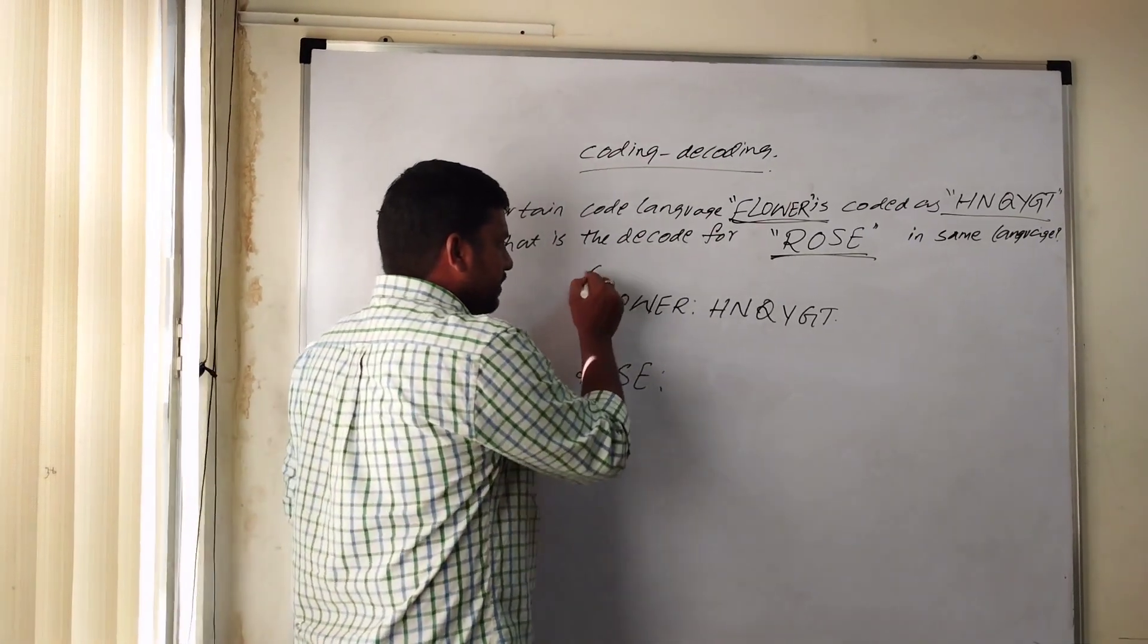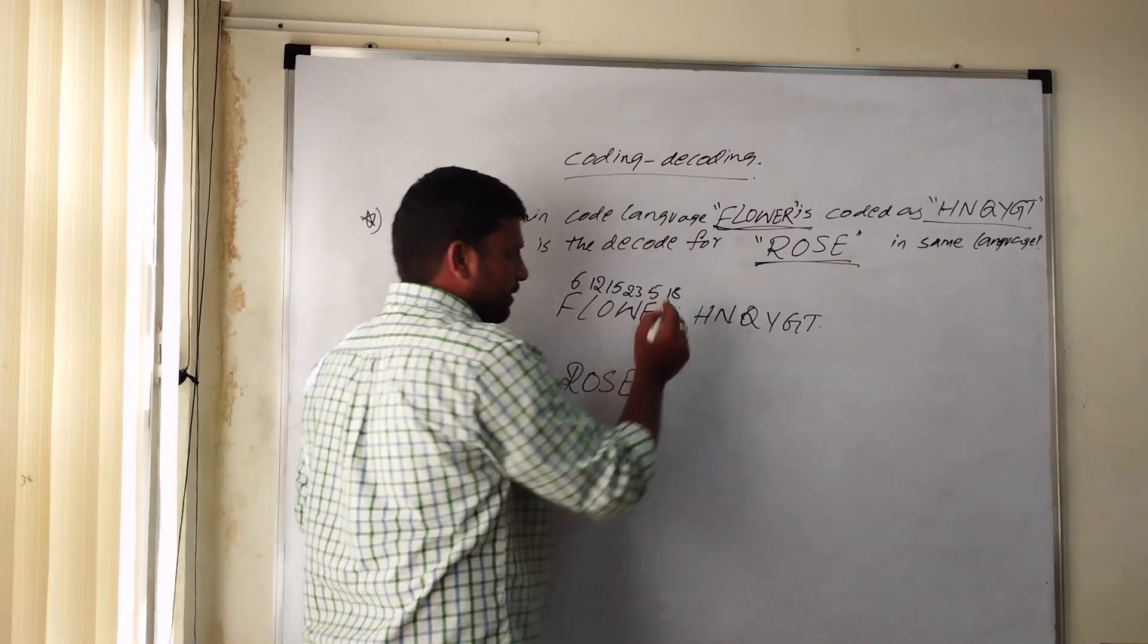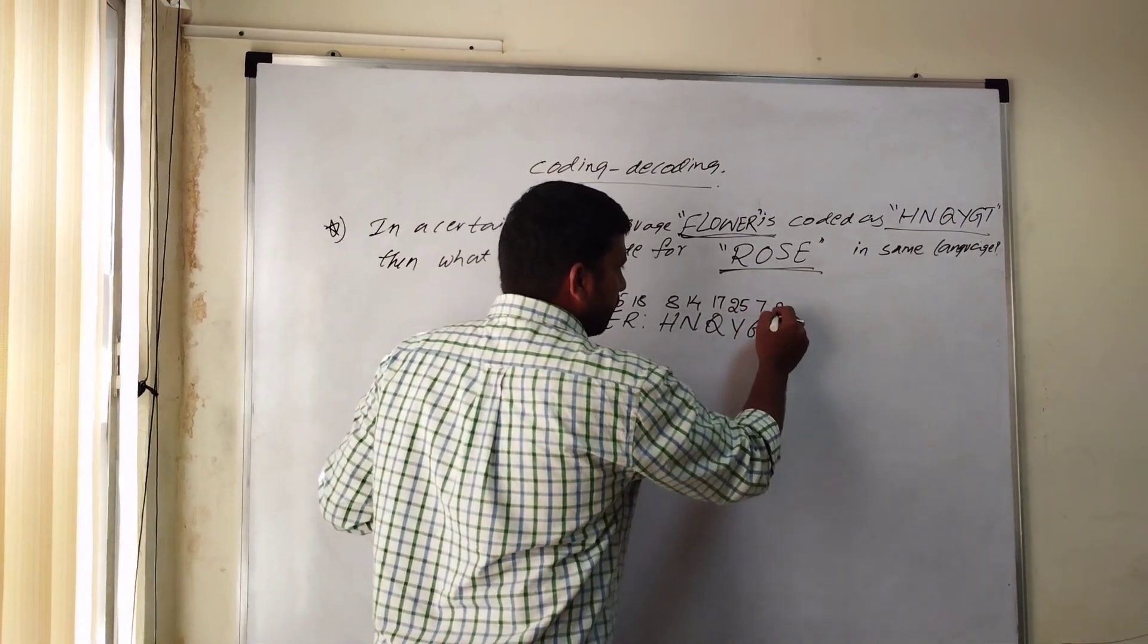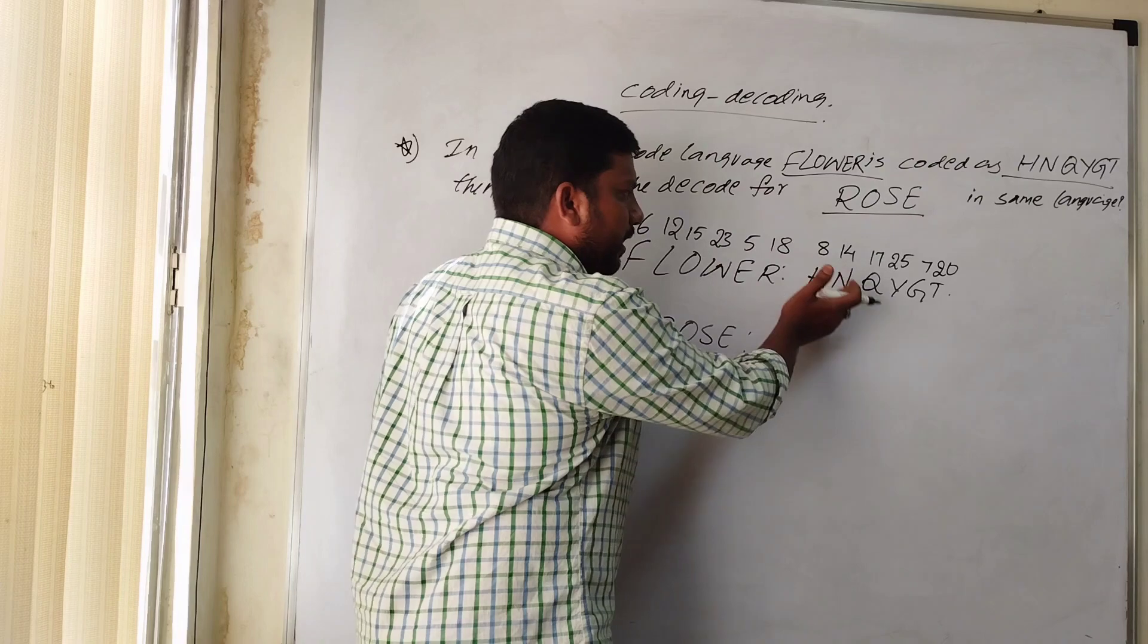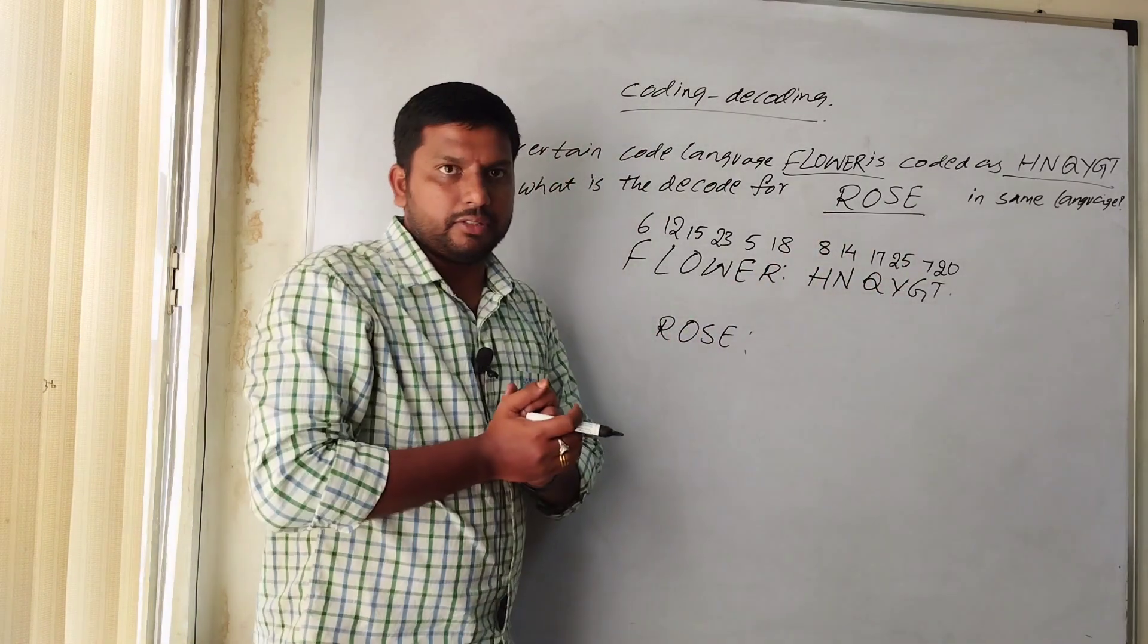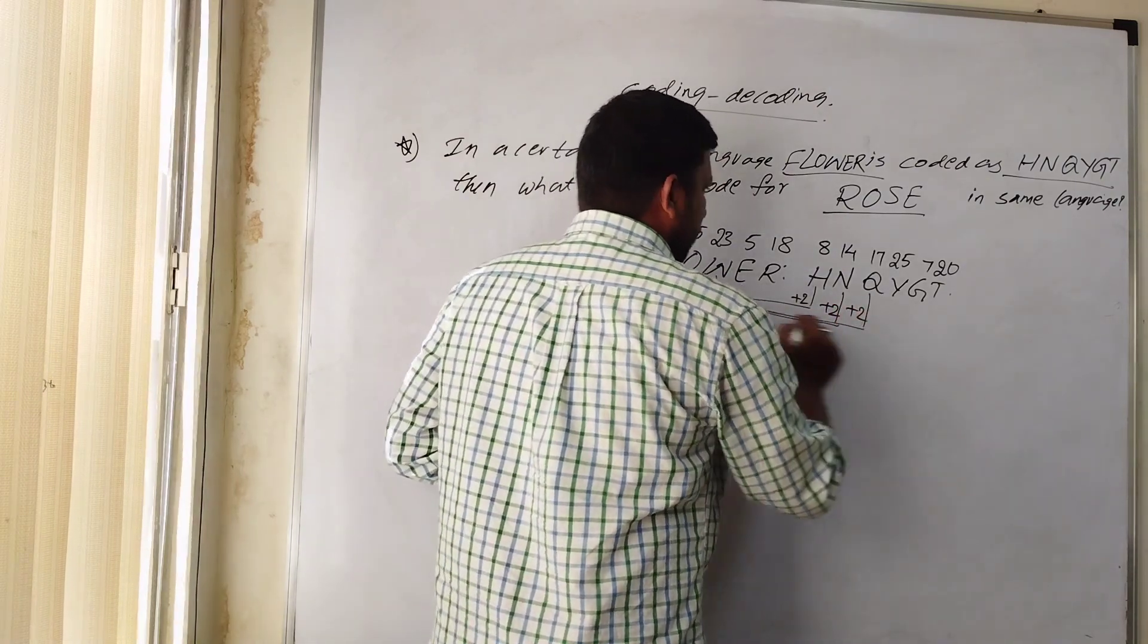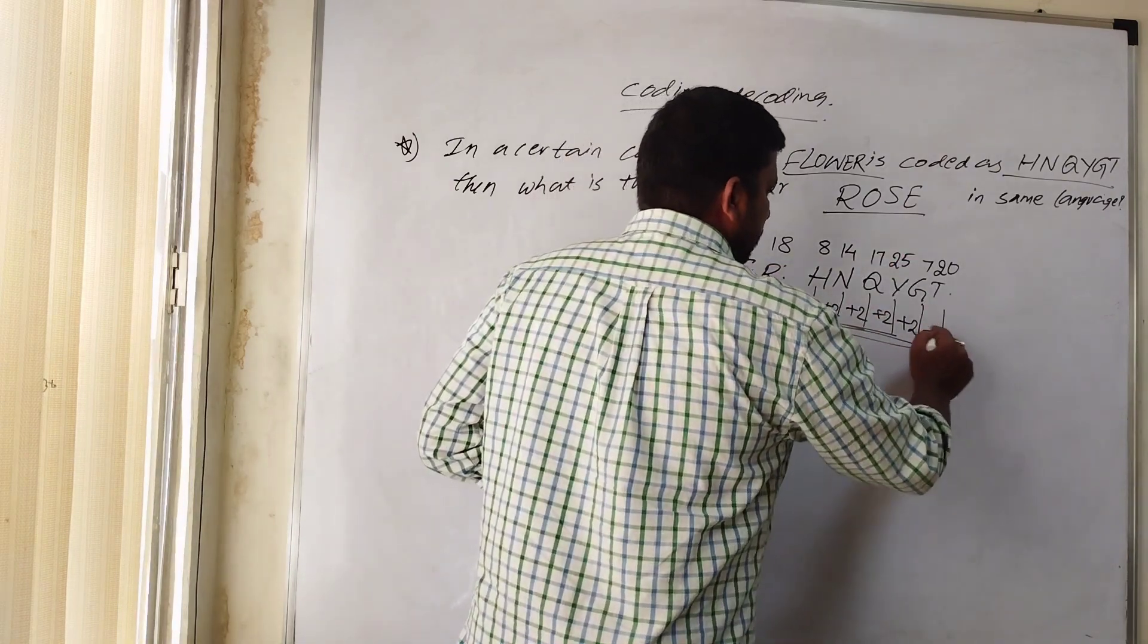Flower is coded as H, N, Q, Y, G, and T. What is the decode for Rose? F is 6th place, L is 12th place, O 15th, W 23, E 5th, and R 18th place. H is 8th, N 14th, Q 17th, Y 25th, G 7th, T 20th place. Between the numbers difference is plus 2. F 6 plus 2 is 8, 12 plus 2 is 14, 15 plus 2 is 17, 23 plus 2 is 25, 5 plus 2 is 7, 18 plus 2 is 20.